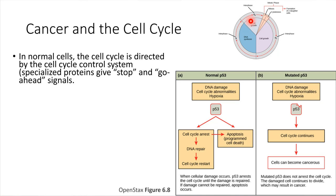This control system consists of a set of proteins that give stop and go signals. At a few points throughout the cell cycle, there are what are called checkpoints. After the DNA duplicates, the cell would undergo a checkpoint before division takes place.